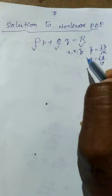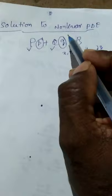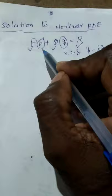In general, in linear partial differential equations, the appearance of small p is only one time, and the appearance of small q is also only one time in the given equation. They do not appear in the same term — only then is it said to be a linear PDE.